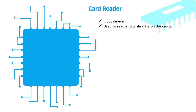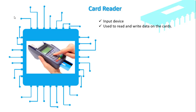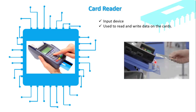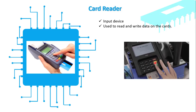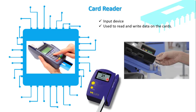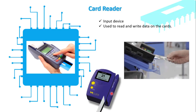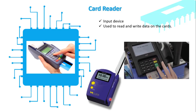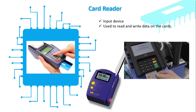The card reader is used to read and write data on two types of cards: smart card and magnetic strip card. You have seen this device in shops — it reads the card while the customer enters their PIN, and the bill can be easily calculated. You don't need to carry cash. The smart card is inserted into the card reader and data is read/written from the chip. The magnetic strip card is swiped through the device for reading and writing.